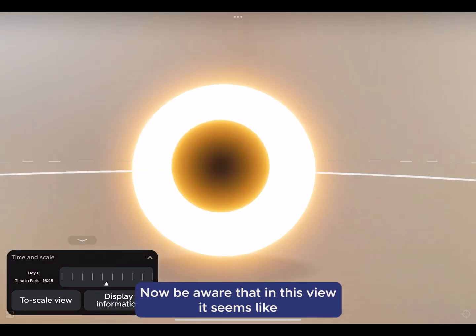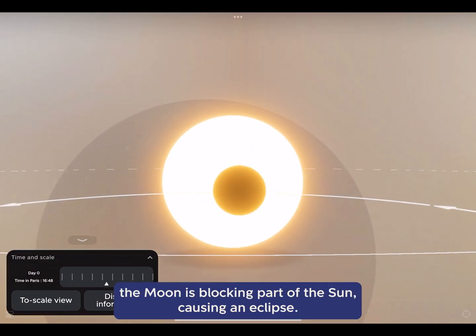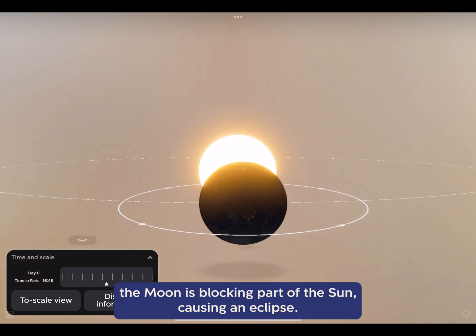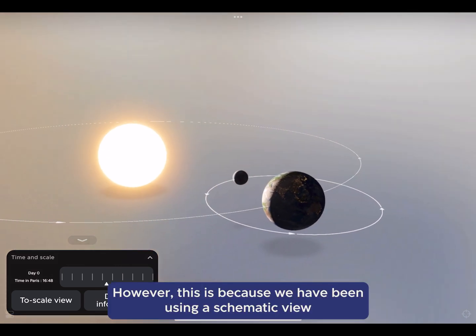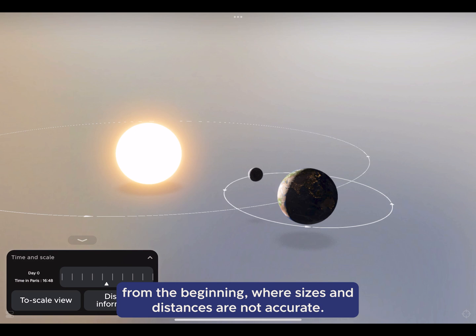Now, be aware that in this view, it seems like the Moon is blocking part of the Sun, causing an eclipse. However, this is because we have been using a schematic view from the beginning, where sizes and distances are not accurate.